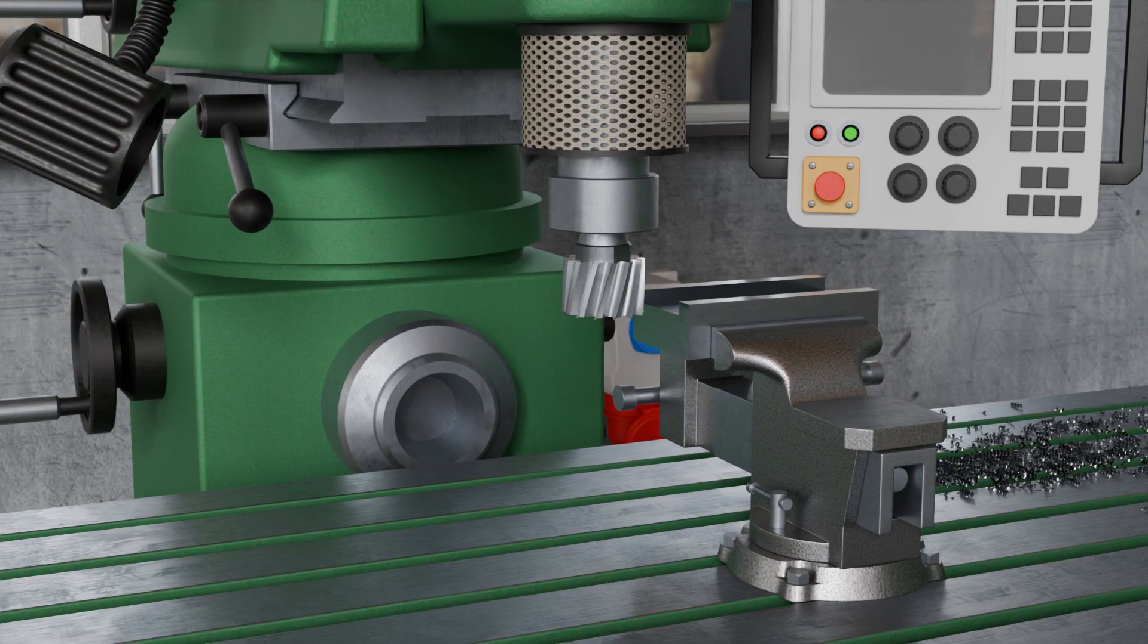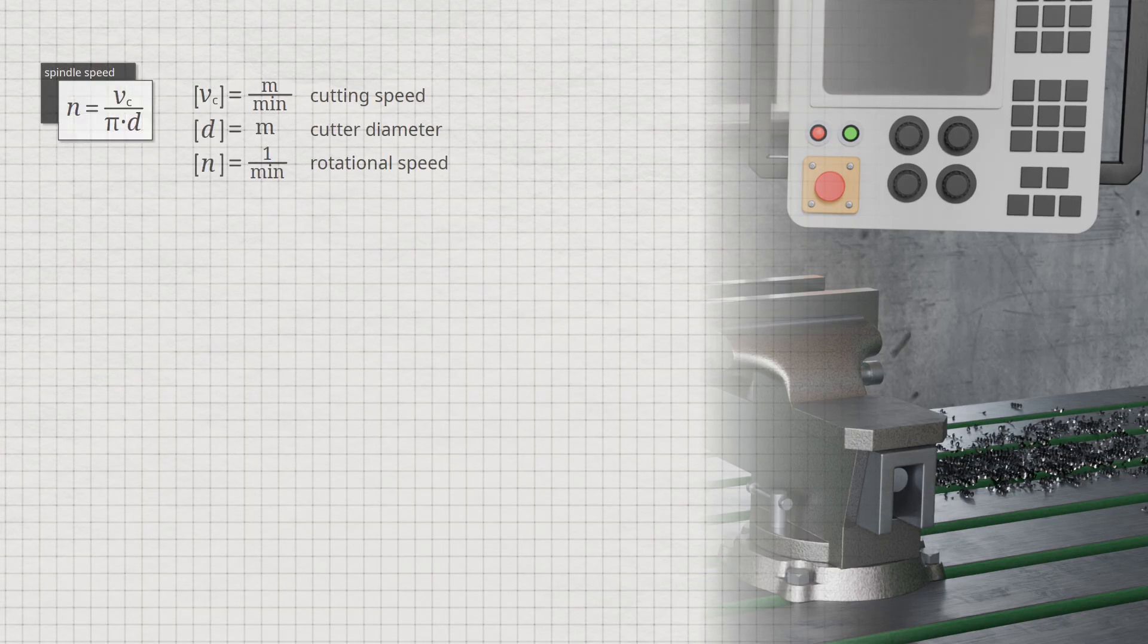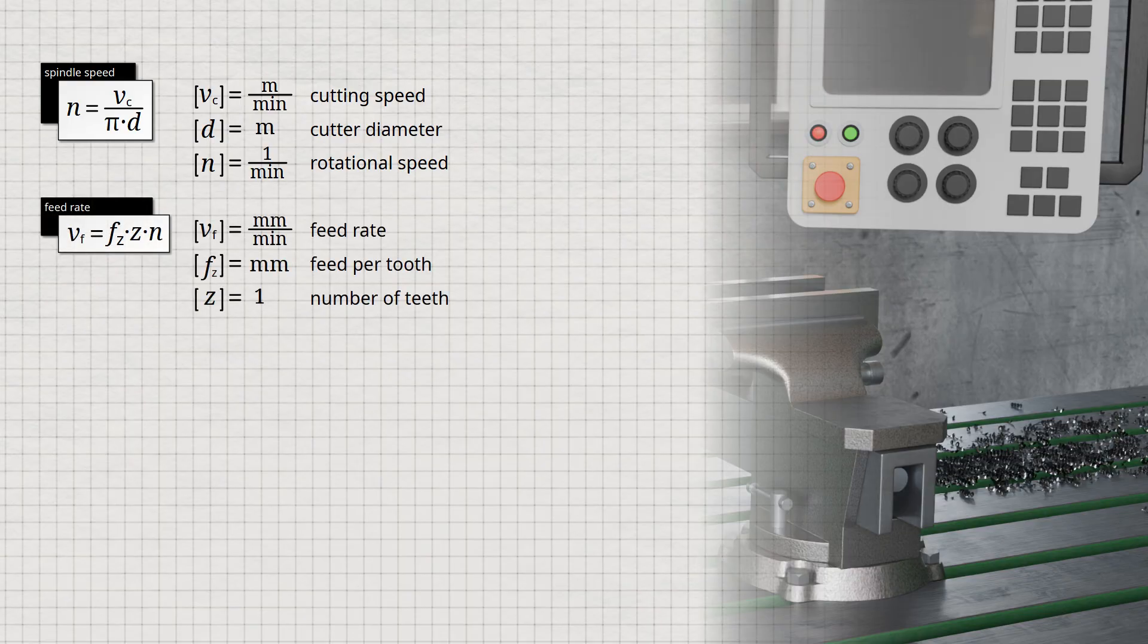In the video on the fundamentals of machining, the various parameters in milling, such as cutting speed, spindle speed, feed, and feed rate, were already explained in detail, along with their interrelationships. Here are the key formulas for determining the spindle speed and feed rate to be set on the machine.